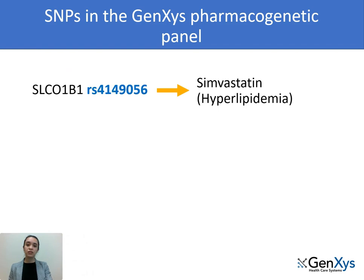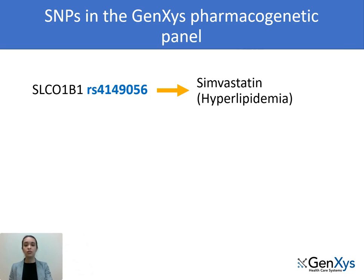The Genetsis Pharmacogenetic Panel includes 59 SNPs that allow us to make recommendations on the use of 116 drugs. One of these SNPs is RS4149056 in the SLCO1B1 gene. Normally, statins such as simbastatin are prescribed to patients with hyperlipidemia in order to reduce cardiovascular morbidity and mortality. However, patients with a variation at this specific position of the SLCO1B1 gene have a higher risk of simbastatin-induced muscular disease. Therefore, a lower dose or an alternative statin should be recommended.